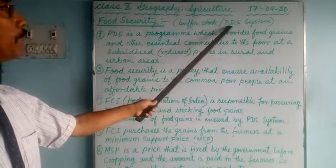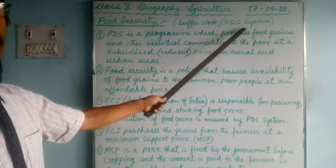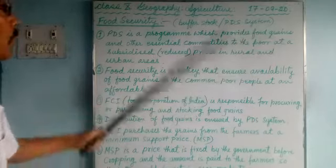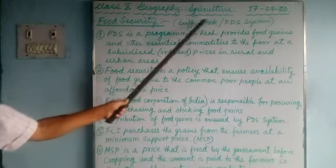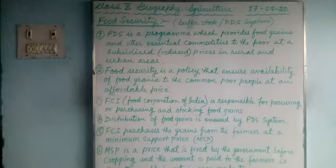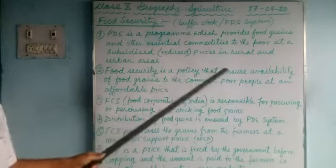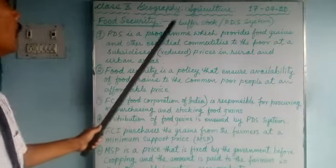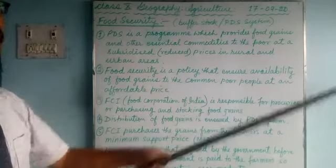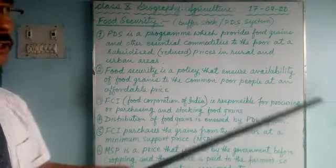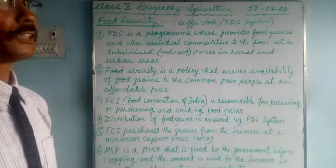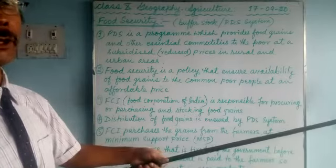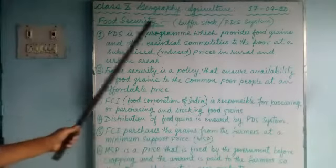The second component is the PDS system — public distribution system — especially for the poor. Buffer stock is maintained by FCI, the Food Corporation of India. They purchase food grains from big landlords and farmers at a minimum support price, MSP, which is fixed by the government beforehand.